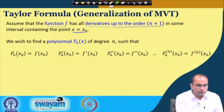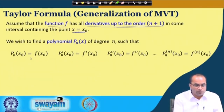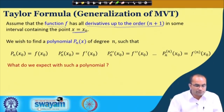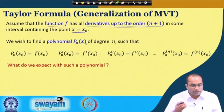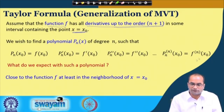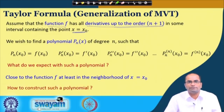What we assume basically is that all these derivatives — the function value itself, the first derivative, the second derivative, and the nth derivative — are all equal to the corresponding derivatives of the polynomial. Having these conditions, what do we expect from such a polynomial? We expect that if we construct such a polynomial, it should be close to the function f. The question is how to construct such a polynomial.